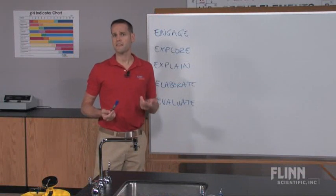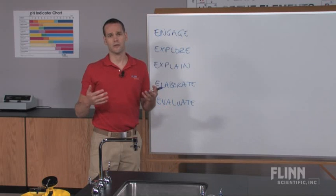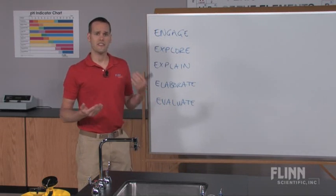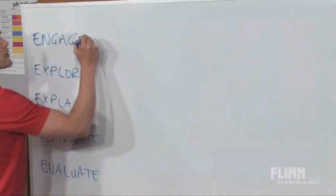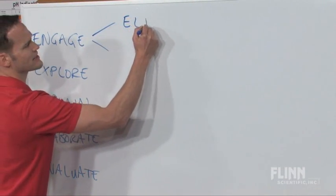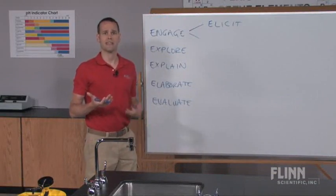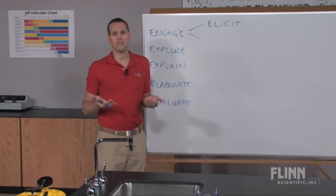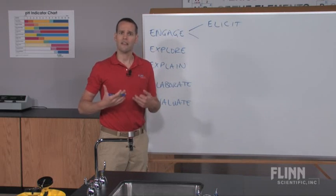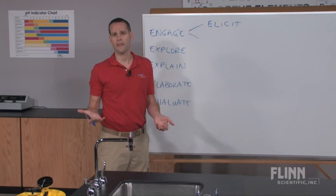There's been an update to the 5E model where two more E's were added, making it the 7E model. In the 7E model, the engage step was broken into two pieces. The first is to elicit what students already know — assessing prior knowledge through informal questioning or whatever method you choose — so you're not wasting time covering what they already know.